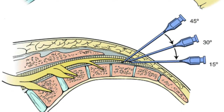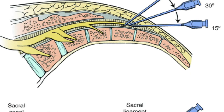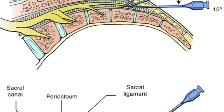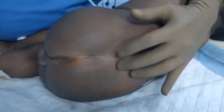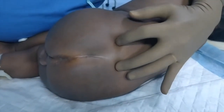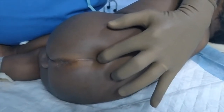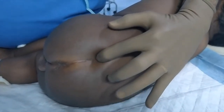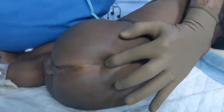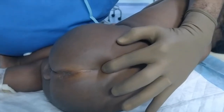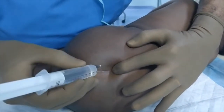The patient has been prepped and draped and we will see a live demo of how to perform a caudal analgesia. This is the sacrum and then the sacral cornua. This is one sacral cornu. I can feel the other sacral cornu, and if you press here it will be the sacral hiatus. If you go into the base you reach the bone.